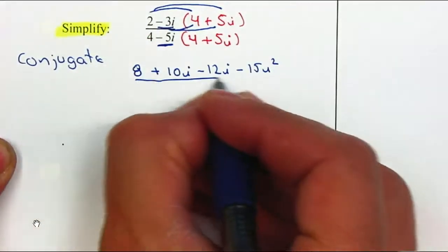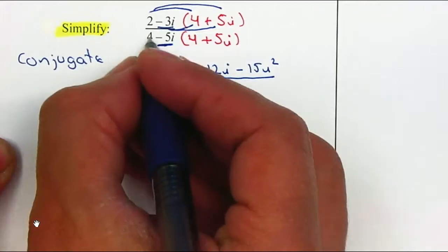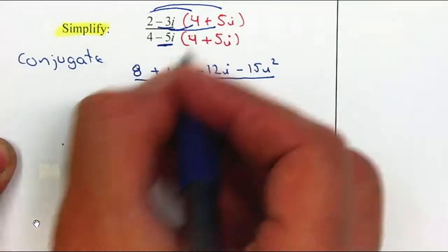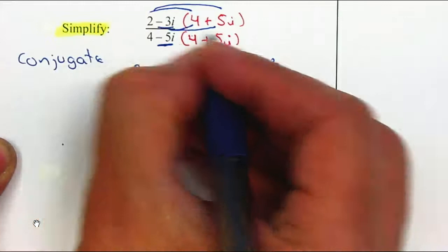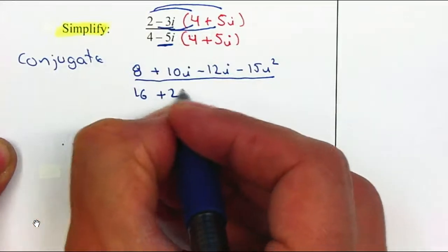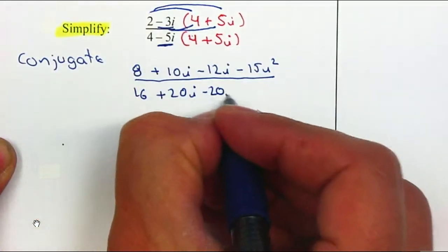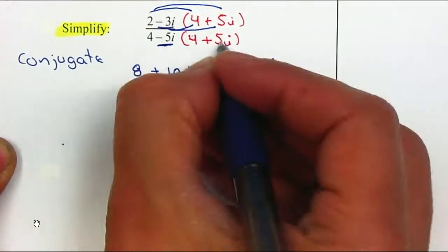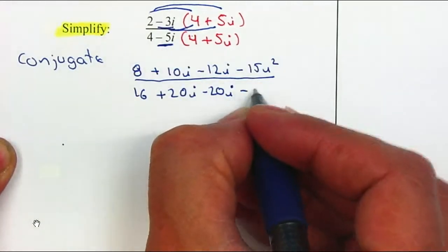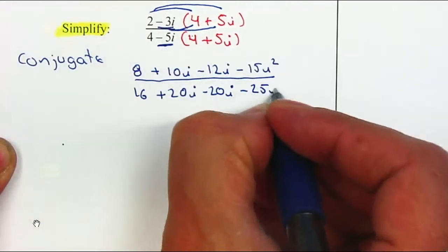For the denominator, we're going to go through the same process. We're going to FOIL. 4 times 4 is 16. 4 times 5i is positive 20i. Negative 5i times 4 is negative 20i. Negative 5i times positive 5i is negative 25i². Don't forget about your squares.